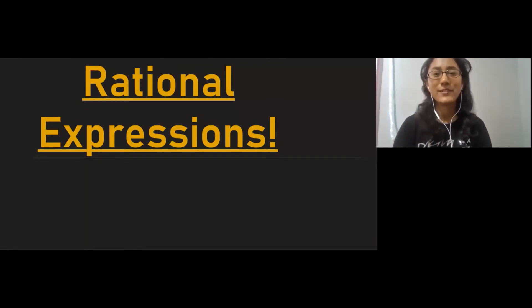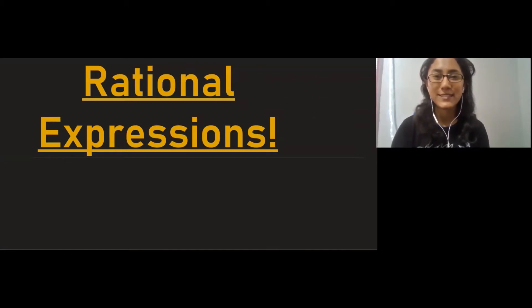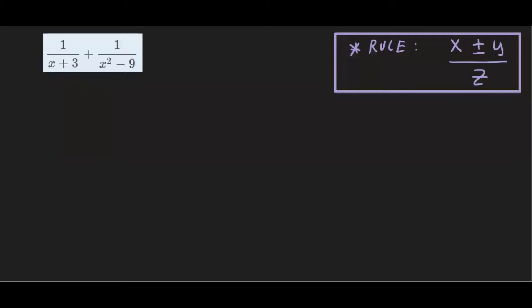Hi everyone, welcome back for another video. In this video I'm going to show you how to simplify rational expressions. So let's get started. For our first example, we want to combine these two fractions. The only way we can do that is by using this rule: if you have x plus or minus y all over the same denominator z, then we can add and subtract the top.